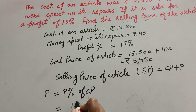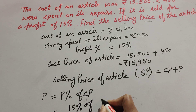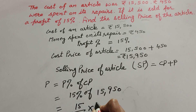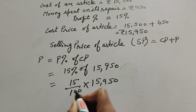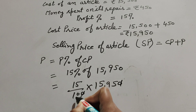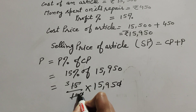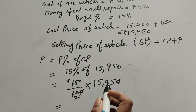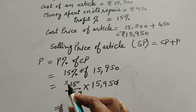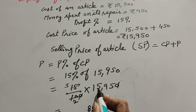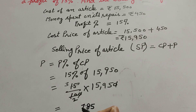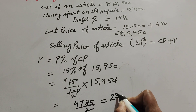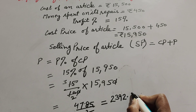Profit = 15% of Cost Price 15,950. So 15% means 15 over 100, multiplied by 15,950. Cancelling zeros and simplifying by dividing by 5: 3 × 1595, giving 4785, divided by 2 equals 2,392.5.